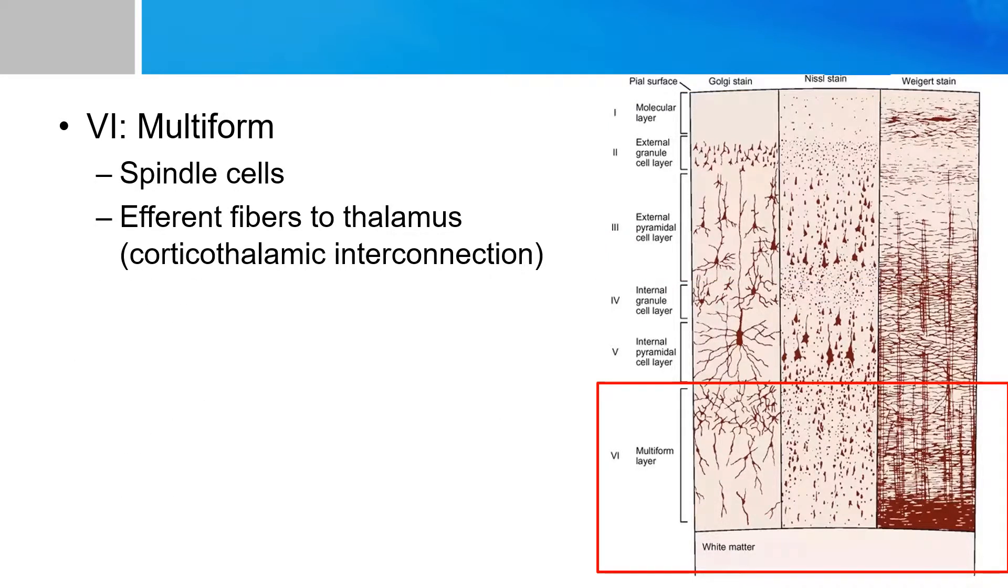Now let's talk about layer six before we go into layer four and five. Layer six is called the multiform layer and is basically the efferent fibers to thalamus. And it contains the efferent corticothalamic interconnection. I typically like to remember this by thinking that layer six is anatomically the closest of the six layers to thalamus and hence is responsible for connecting between the gray matter and the thalamus.